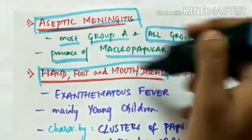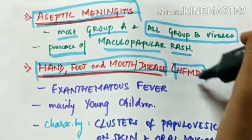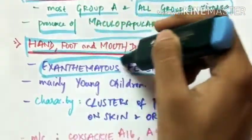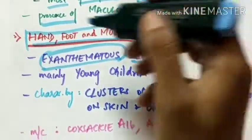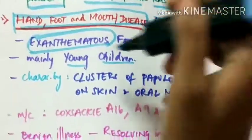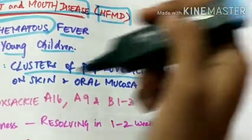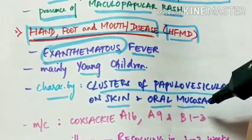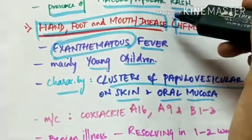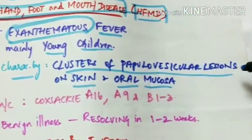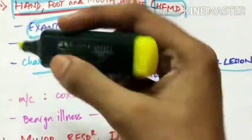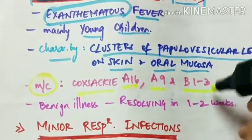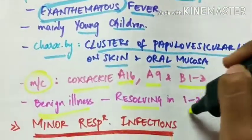Hand, foot, and mouth disease (HFMD) is characterized by exanthematous fever with skin involvement. It mainly affects young children and is characterized by clusters of papulovesicular lesions on the skin of the hands and feet and the oral mucosa. It is most commonly caused by Coxsackie A16, A9, and B1, B2, B3. It is a benign illness that usually resolves in 1 to 2 weeks.